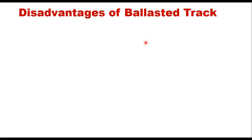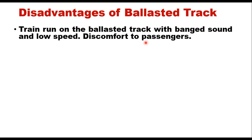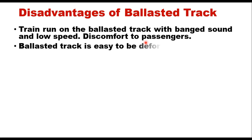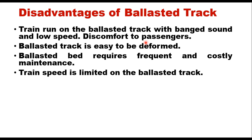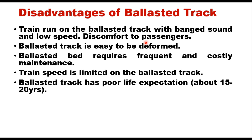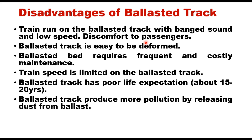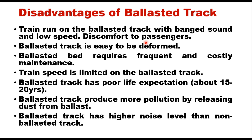There are several disadvantages of ballast track. Trains run on ballast track with a banging sound and at low speed, creating discomfort to passengers. It is easy to be deformed because of the yielding property of the ballast, and therefore the ballast bed requires frequent and costly maintenance. Train speed is limited on this type of track and ballasted track has poor life expectancy of around 15 to 20 years. It produces more pollution by releasing dust from ballast, and finally it has a higher noise level than non-ballast track.